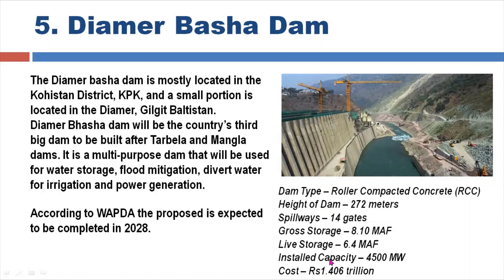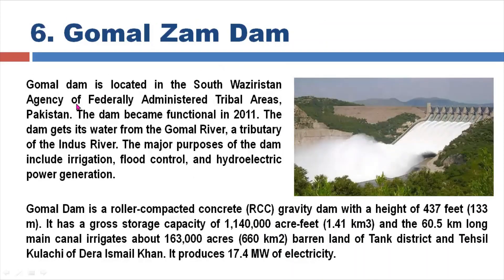The Gomal Zam Dam is located in South Waziristan Agency of the Federally Administered Tribal Areas (FATA) of Pakistan. The dam became functional in 2012. The dam gets its water from the Gomal River, which is a tributary of the Indus River.